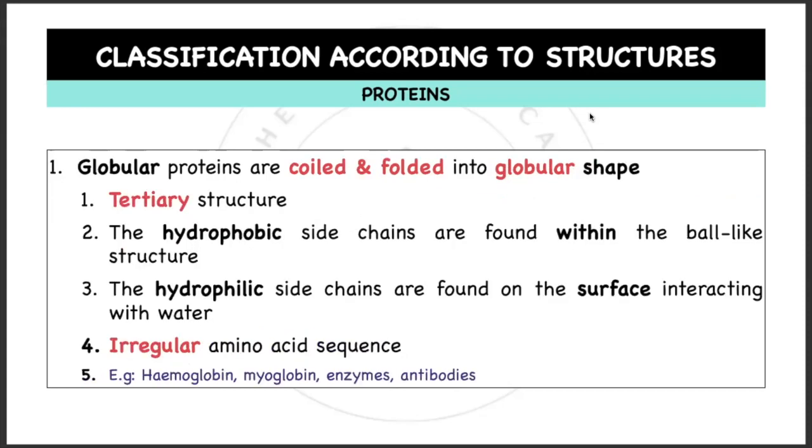Globular proteins are coiled and folded into globular shape. They are tertiary structure. The hydrophobic side chains are found within the ball-like structures—hydrophobic meaning they do not like water, hydro water, phobic phobia. And the hydrophilic side chains are found on the surface interacting with water—hydro water, philic meaning philia love. They are irregular amino acid sequence. Examples would be hemoglobin, myoglobin, enzymes, and antibodies.